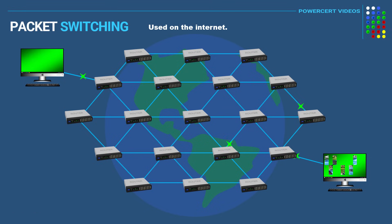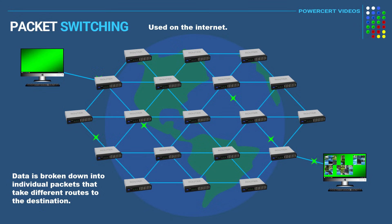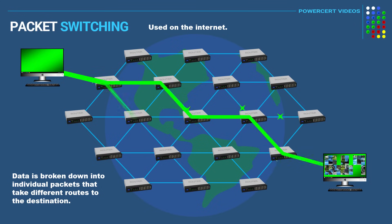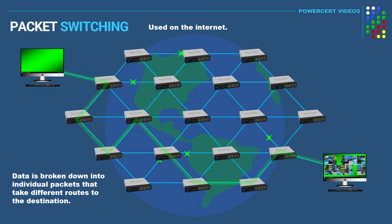So as a device sends data, the data is broken down into individual packets and then those packets will individually and independently make their way to the destination. And since they are all independent, they will take different routes to the destination as they travel.